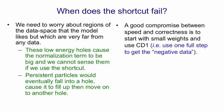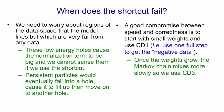A good compromise between speed and correctness is to start with small weights and use CD-1—that is, contrastive divergence with one full step to get the negative data. Once the weights have grown a bit, the Markov chain is mixing more slowly and now we can use CD-3. Once the weights have grown more we can use CD-5 or CD-10. By increasing the number of steps as the weights grow, we can keep the learning working reasonably well even though the mixing rate of the Markov chain is going down.